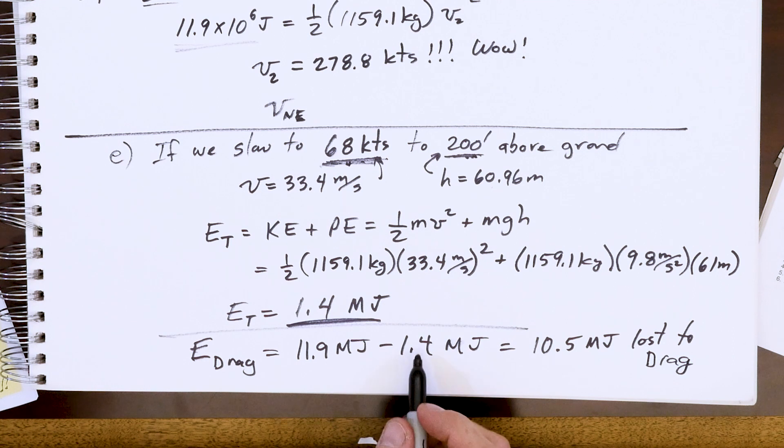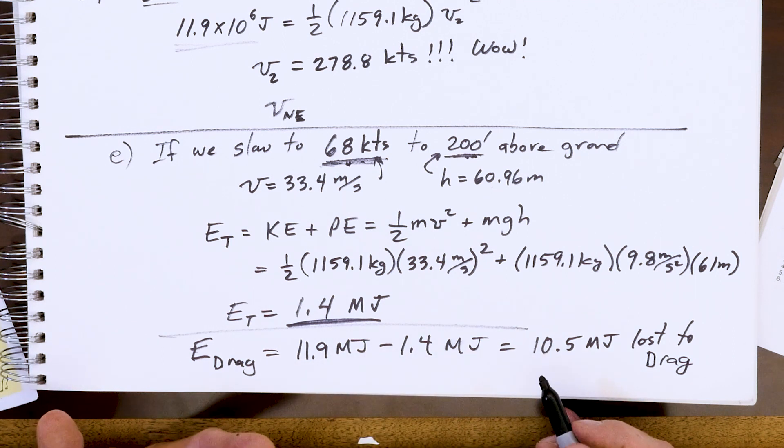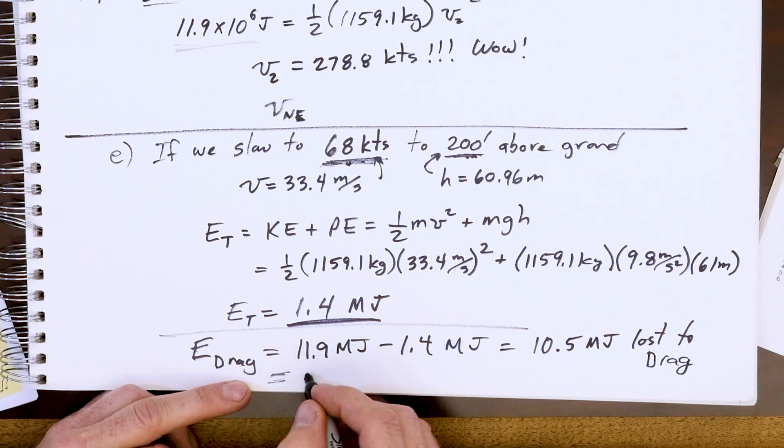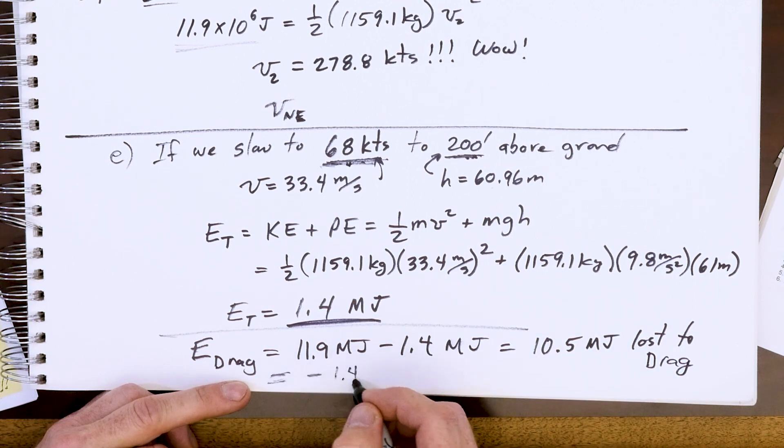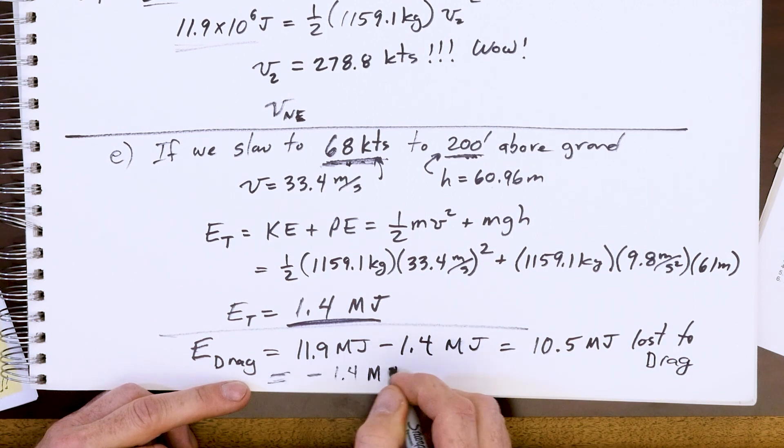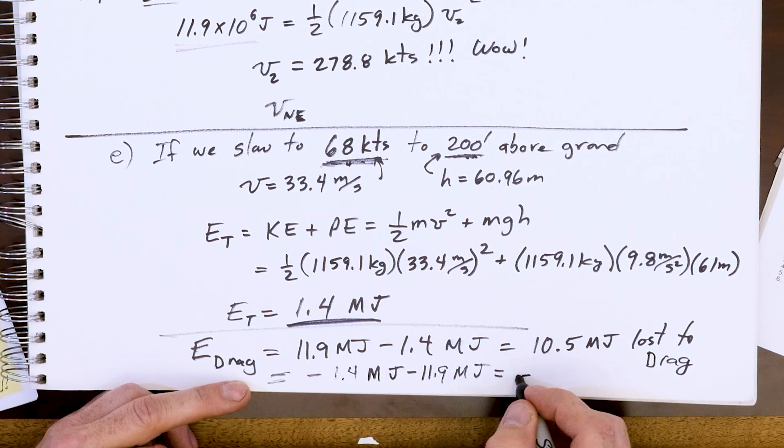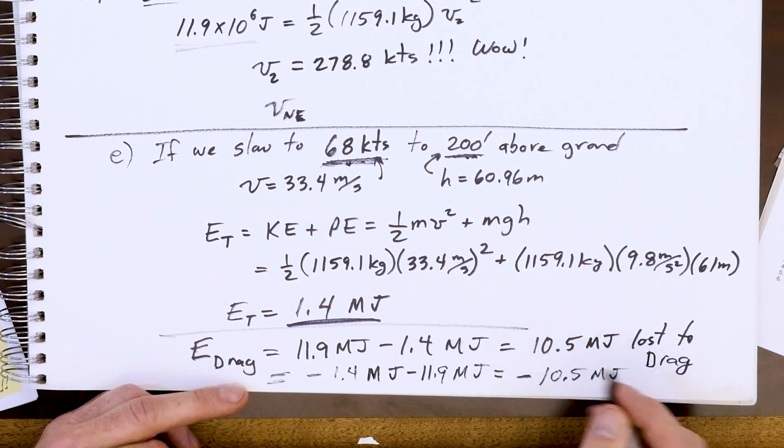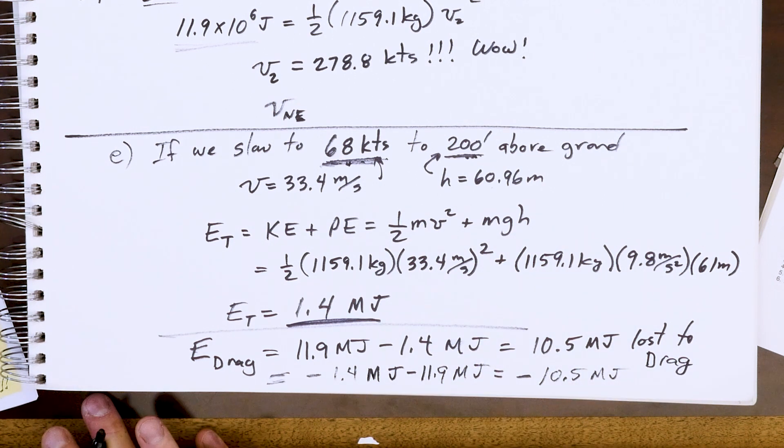Some of my colleagues like to do it the other way because it's final minus initial gives you a negative number because it's lost. So if you like that better, that's fine. That's actually probably more proper, but I like to think of energy as always being positive. But it's fine if you want to put 1.4 megajoules minus 11.9 megajoules, and that's how a lot of textbooks have it so you don't get confused and they say a negative number means energy lost – equally fine. So we're losing a tremendous amount of energy, 10 and a half out of 11.9, if you do a good job as a pilot dissipating all this energy.